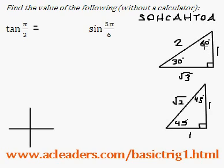The opposite to 60 degrees is root 3. The adjacent side is 1. So tangent pi over 3 is just going to be root 3 over 1, which is equivalent to just root 3. That's it.